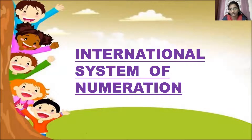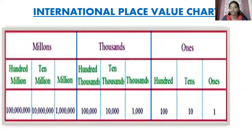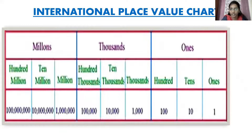So you have three places in each period. This is what is the international place value chart. In ones period: ones, tens, hundreds. Thousands period: thousands, ten thousands, hundred thousands. Millions period: million, ten million, hundred million are the places.